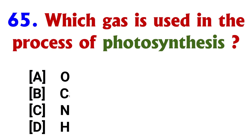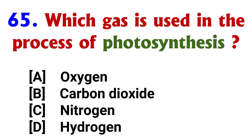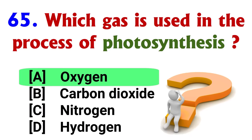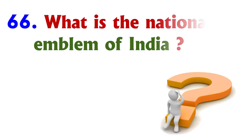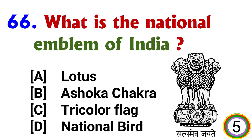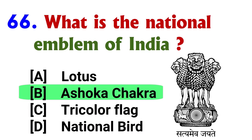Which gas is used in the process of photosynthesis? Answer: option B, Carbon Dioxide. What is the national emblem of India? Answer: option B, Ashok Chakra.